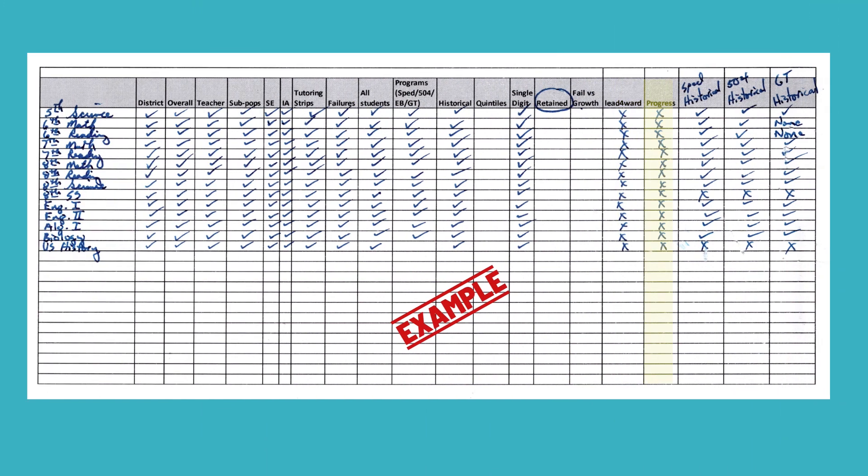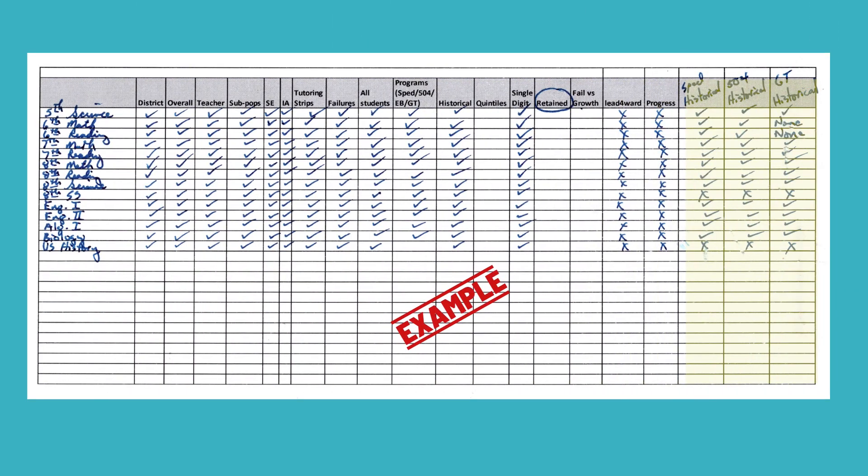Progress — and in the state of Texas, progress is 85% of our accountability system. So I want to know that kids are making progress, and if they're not, why not? Which kids are not? Now, you'll notice I left some columns blank. Every time I do this, I think of things I hadn't thought about before that I really want to analyze — like the historical performance of SPED students, 504 students, or GT students.